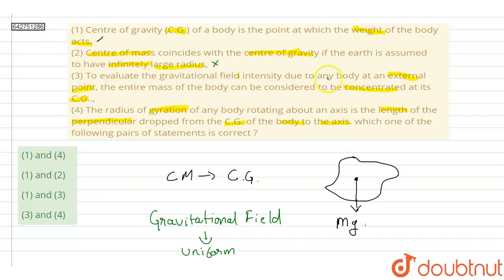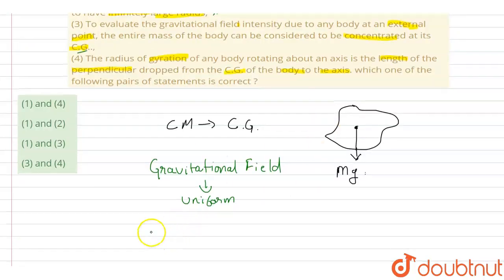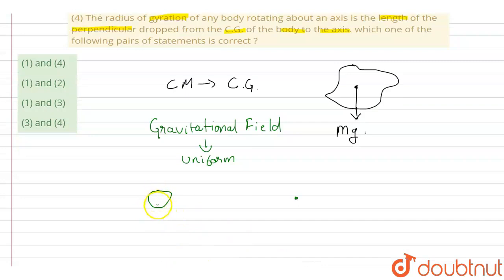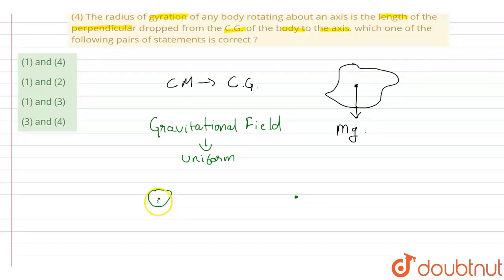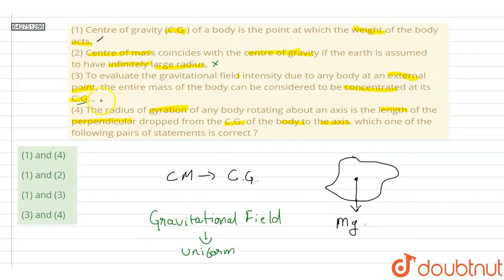The third statement is: to evaluate the gravitational field intensity due to any body at an external point, the entire mass of the body can be considered to be concentrated at its center of gravity. To calculate gravitational field intensity at any external point, we can consider the body to be a point mass, meaning all of its mass is concentrated at the center of gravity. So statement three is correct.